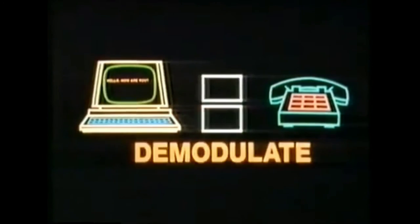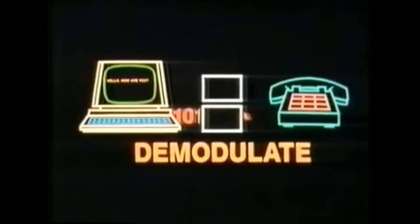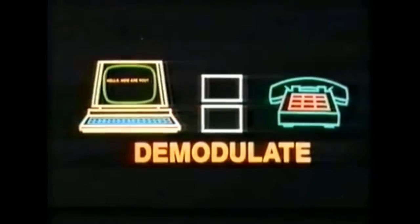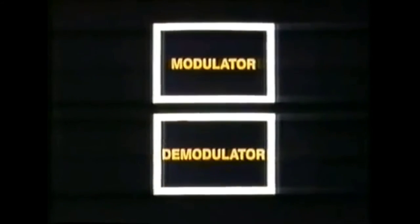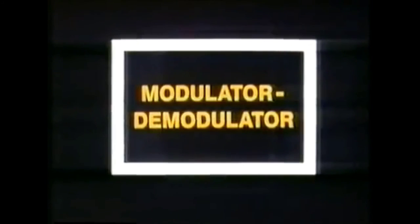At the destination point, there is again a requirement of a device which can convert analog data to digital data — that means demodulate. So the message is received. In this way, with the help of two devices — modulator and demodulator — one computer system can communicate with a second computer system with the help of a telephone line.